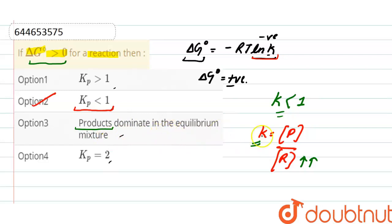not a correct statement because reactants dominate here as compared to products. So the correct option here will be option two.